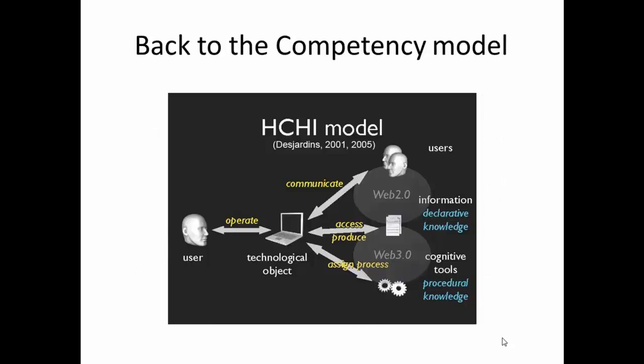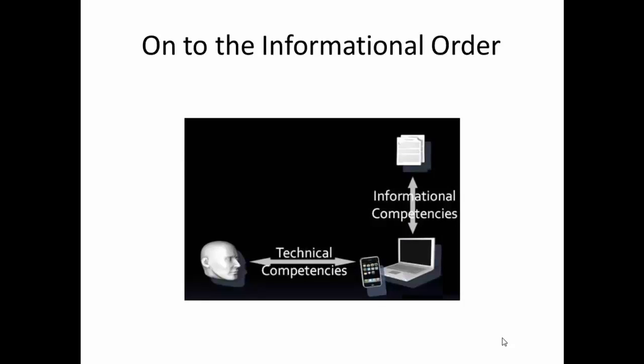The HCHI model (Desjardins 2001-2005) is being used in this course as it outlines the major technological competencies that will be explored throughout the course. The informational order addresses issues pertaining to the use and generation of declarative knowledge. Themes in this order are inclusive of those explored in the last module, as the learner-user continues to interact with ICT — so issues of user competency regarding interfaces, organizational structures, etc., are added to the complexities of finding and managing information in its various guises.